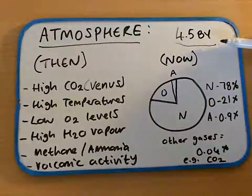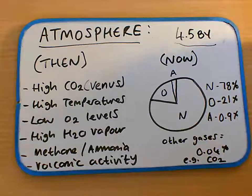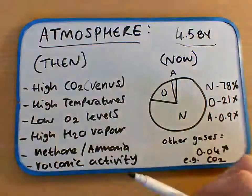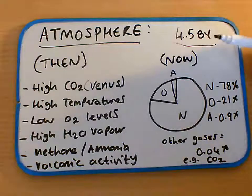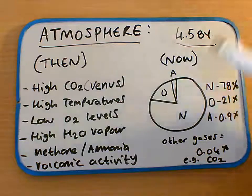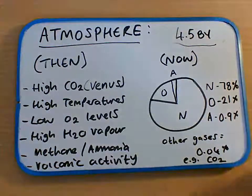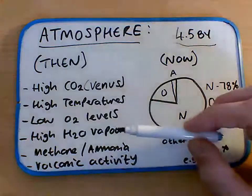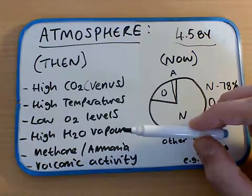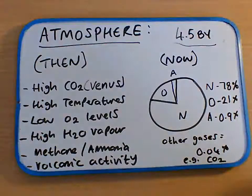Now over time, as life evolved, what started to happen as the planet cooled and volcanic activity stabilized is photosynthetic organisms evolved. They used the carbon dioxide and sunlight and actually produced oxygen, so oxygen levels increased. The water vapor was condensing as the planet cooled, and that formed a large part of the ocean. So the proportion of the gases changed massively.